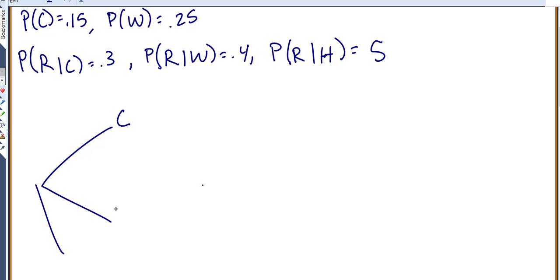So you're first either cold, warm, or hot. The probability of it being cold was 0.15. They said the probability of being warm is 0.25, and the probability of hot, they didn't tell us, but we can figure that out by subtracting it. So 1 minus 0.25 minus 0.15 gives me 0.6, because each set of branches has to add up to 1 each time.